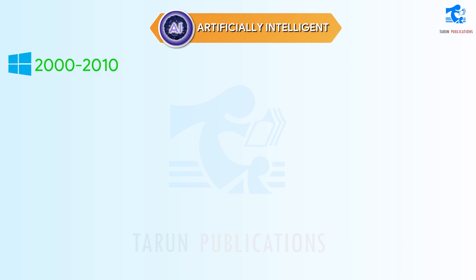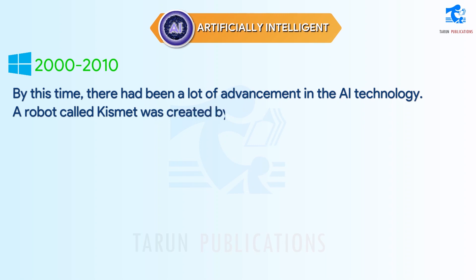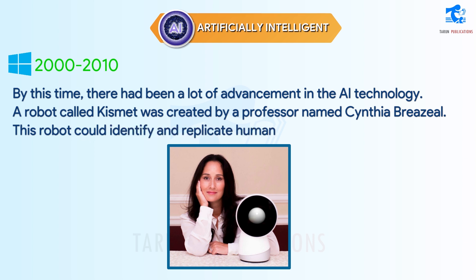2000-2010. By this time, there had been a lot of advancement in AI technology. A robot called Kismet was created by a professor named Cynthia Breazeal. This robot could identify and replicate human faces and emotions.